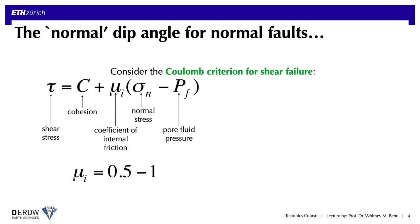Let's talk first about the ideal or typical angle that normal faults should have. To figure this out, we want to consider the Coulomb criterion for shear failure, which is an empirical relationship that tells us at what shear stress tau an intact rock will form a fault as a function of the rock's cohesive strength C, its coefficient of internal friction μi, and the effective normal stress, which is a function of the applied normal stress minus the pore fluid pressure.